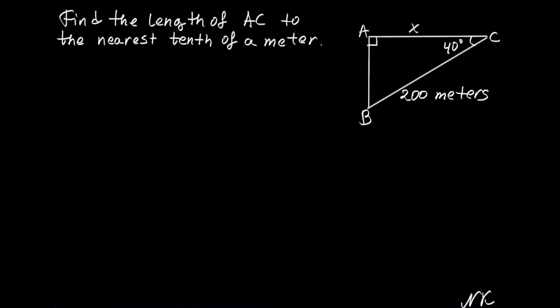AC is one leg of a right triangle, with A being the right angle, and BC being the hypotenuse, which measures 200 meters.